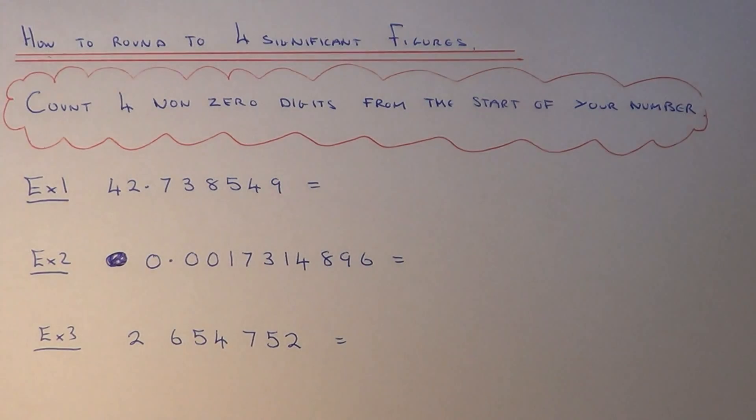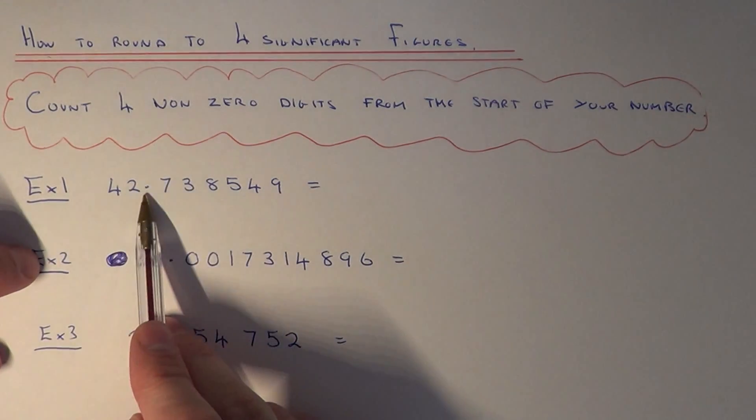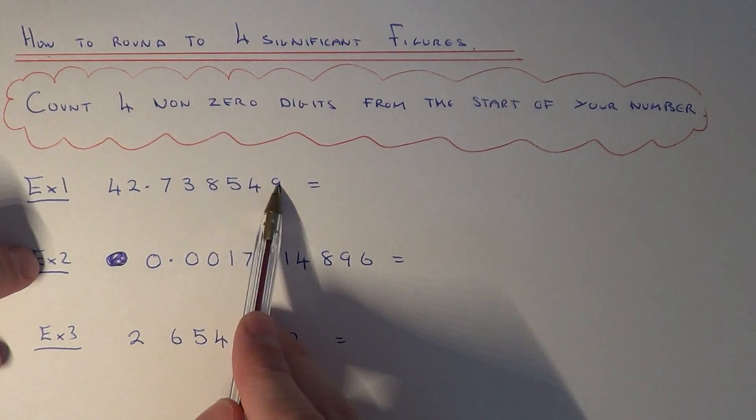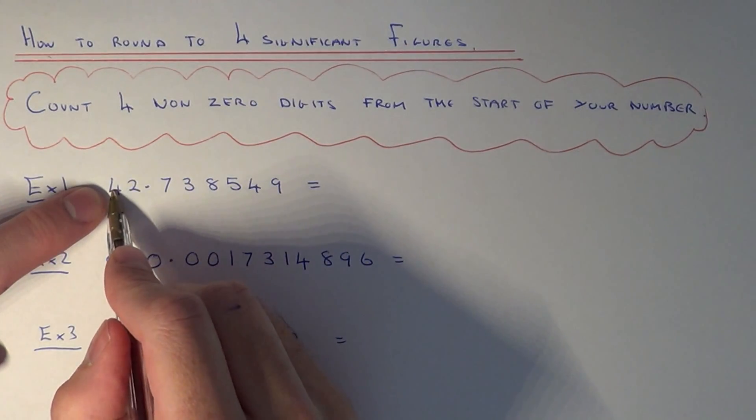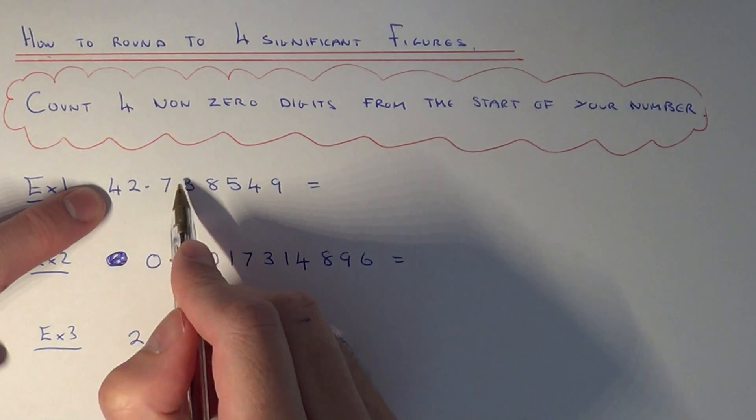Let's have a look at example one. We've got 42.738549. If we count four non-zero digits from the start of the number, we've got one, two, three, four.